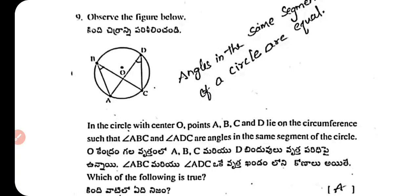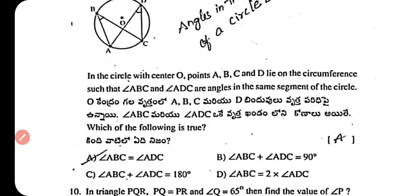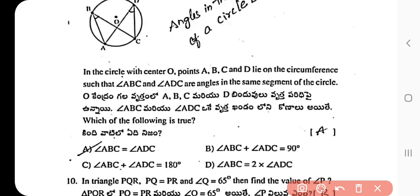Question 9: In a circle with center O, points A, B, C and D lie on the circumference such that angle ABC and angle ADC are angles in the same segment. Which is correct — angle ABC = angle ADC; angle ABC + angle ADC = 90°; angle ABC + angle ADC = 180°; or angle ABC = twice angle ADC? The right answer is option A: angles subtended by the same arc in the same segment are always equal, so angle ABC = angle ADC.